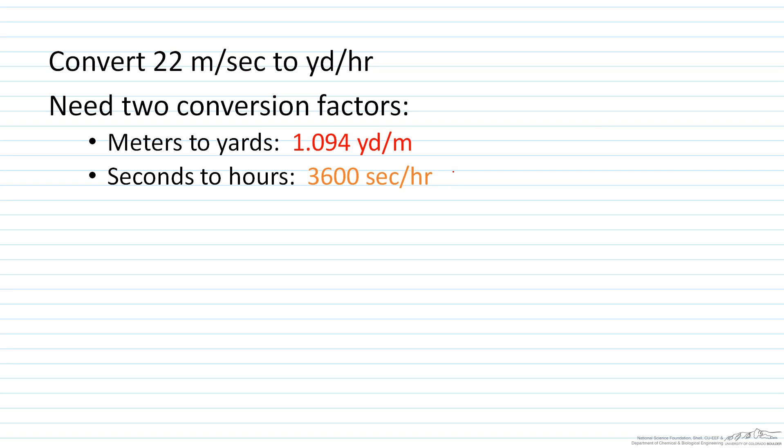Got another example here. How can we convert 22 meters per second to yard per hour? So we're going to go 22 meters per second. And we eventually want yard per hour. So a lot of times what I'll do is I'll sort of set up this kind of framework here. We know we're going to have to go meters to yard. So how do I convert meters to yard?